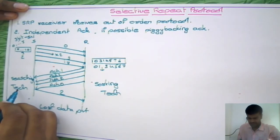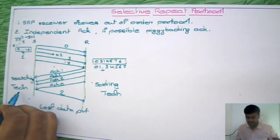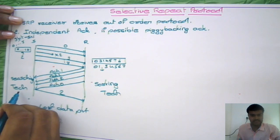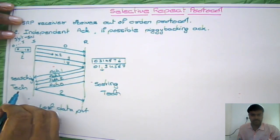So in the receiver side it needs a sorting technique, and in the sender side it needs a searching technique. This is one of the problems faced in the Selective Repeat protocol.